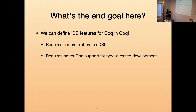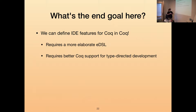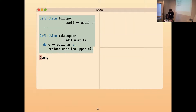So what's the end goal here? I want to define IDE features for Coq in Coq itself. I realize this requires a more elaborate EDSL or a better extensibility story. But we might get there one day. Or we can apply this trick to other languages, like Idris — Idris already has a better extensibility story. It also requires better support from Coq for type-driven development; for example, if you want to ask for the type of a hole, we currently cannot do that in Coq, so we need a better way to do that.